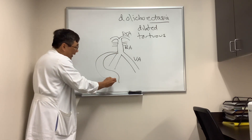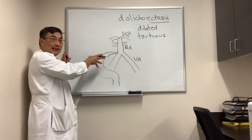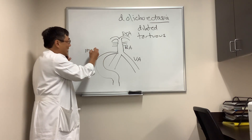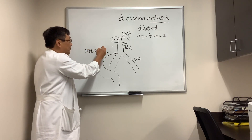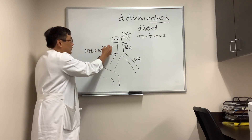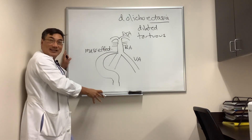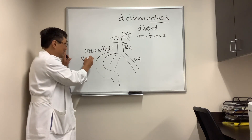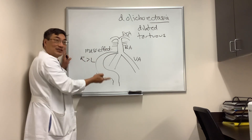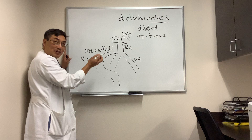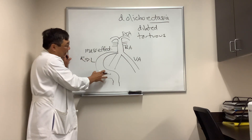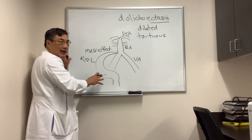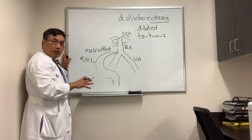And because it's dilated and tortuous, it can exert mass effect. And because it's tortuous, it can go to one side or the other — like the right side or the left side. And if it is exerting mass effect on cranial nerves, then it'll come to neurology.